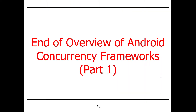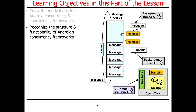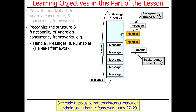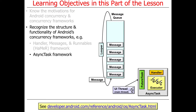Now that you know about Android concurrency frameworks and the design constraints they address, let's talk about the structure and functionality of Android's concurrency frameworks. The two frameworks are the Handlers, Messages, and Runnables framework — the Hammer framework — and the Android AsyncTask framework. They share some common components, but are also very different in other ways, with pros and cons to each.